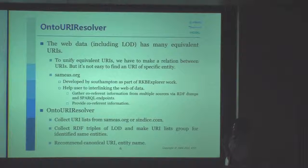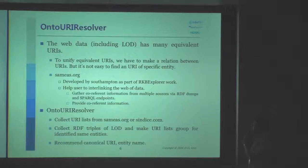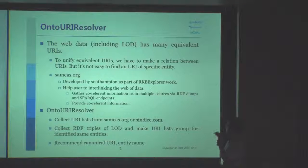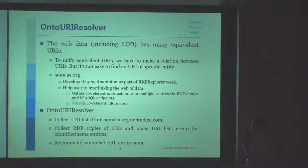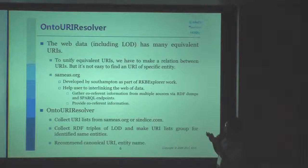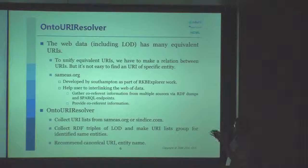SameAs URI is a web service developed by Samsung and Tunes, part of the RKBD Explorer. It helps users to interact with the web of data. It gathers correct information from multiple sources via RGDOM and SPARQL endpoint, and it provides core account information. But it does not merge several groups using RGDOM — it just collects core account information and provides it.